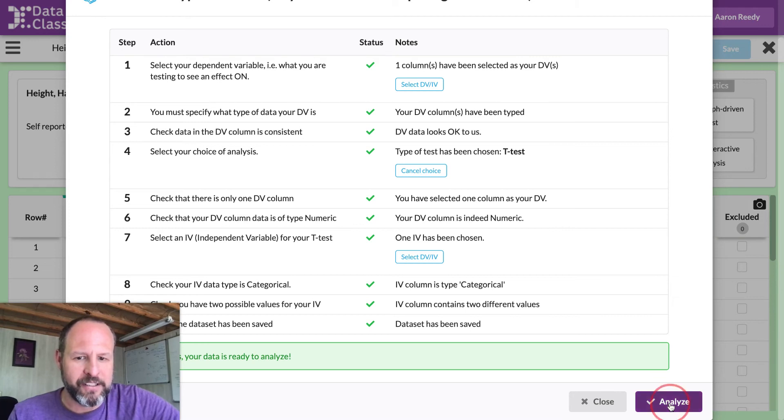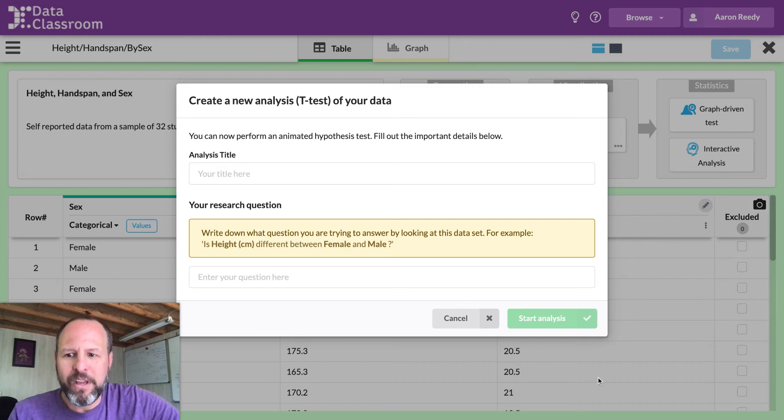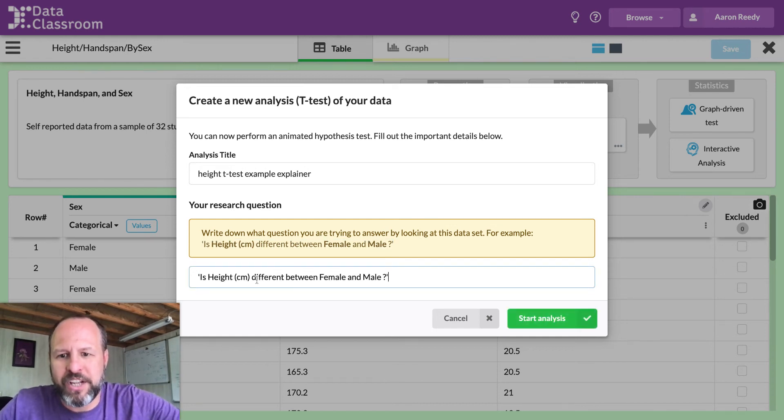Just scroll to the bottom there. And I'm going to click this purple analyze button in the corner. Now, first thing we have to do is give our analysis a title. So we'll call this height t-test example explainer. And then you want to state a research question. Now, this is important. If you're going to be applying statistics, you want to know what is the question you are asking when you do this math. And you can see here, because I've chosen height as my dependent variable and sex as my independent variable, the computer is suggesting this question: Is height different between female and male? And this is an open-ended field. You can write whatever you want. But this is an appropriate way to write this question. So I'm going to leave it at that.